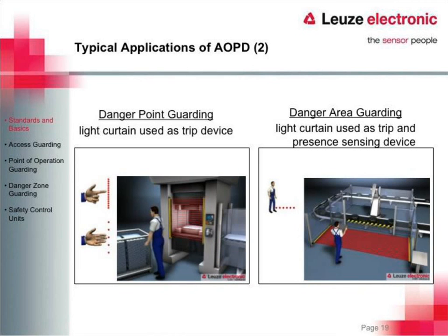The areas where we would typically see a light curtain are danger point guarding or danger area guarding. For danger point guarding, this is going to be up close and personal with the machine — manually fed, with the light curtain very close to the danger point. We're going to have a smaller resolution than we would see on a multi-beam, which means a hand can't be inserted as far before tripping, letting us get a lot closer to the machine. This is where you see it on process machines where they're hand loading and unloading, and also on press brakes and trim presses.